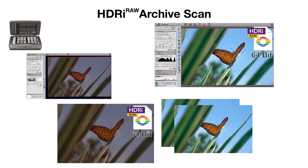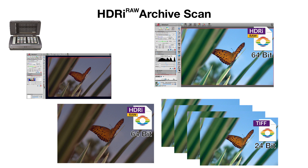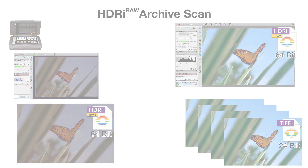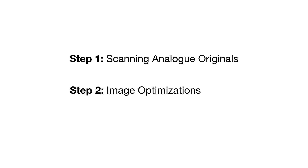Further 24-bit files can be generated at any time you like. Another advantage of HDRI RAW files is that scanning and optimizing can take place spatially and temporally apart from each other. This gives you the opportunity to quickly scan your valuable originals, while optimization can take place at another time.